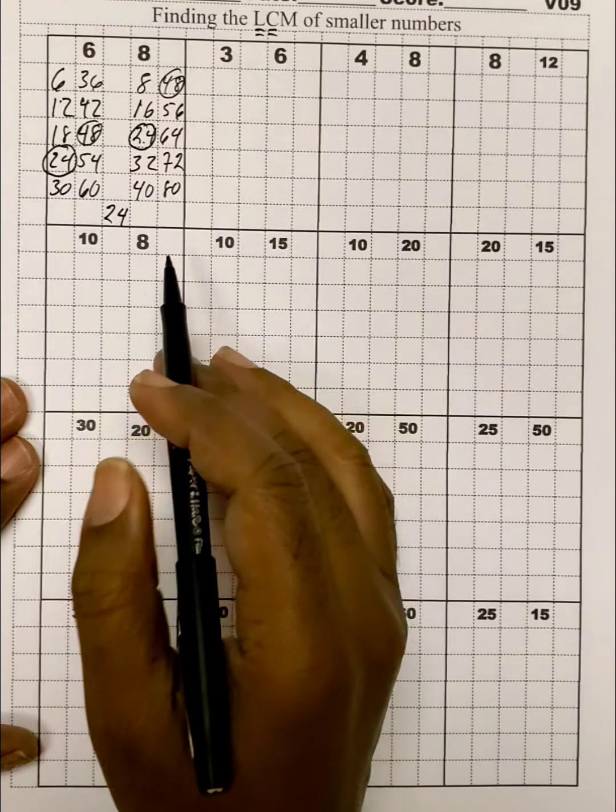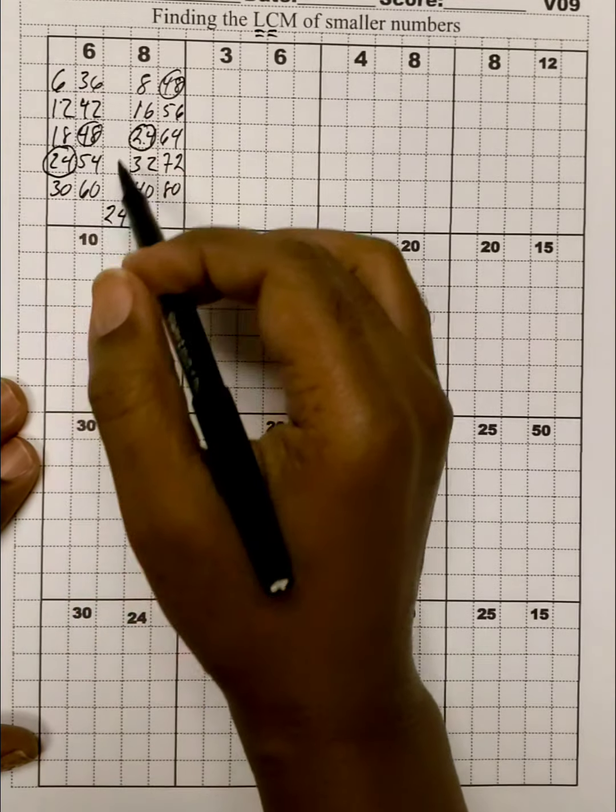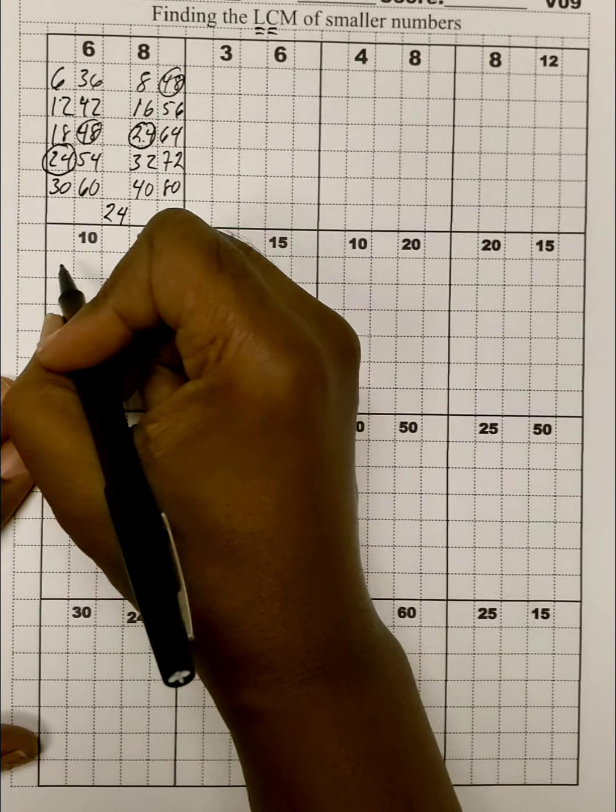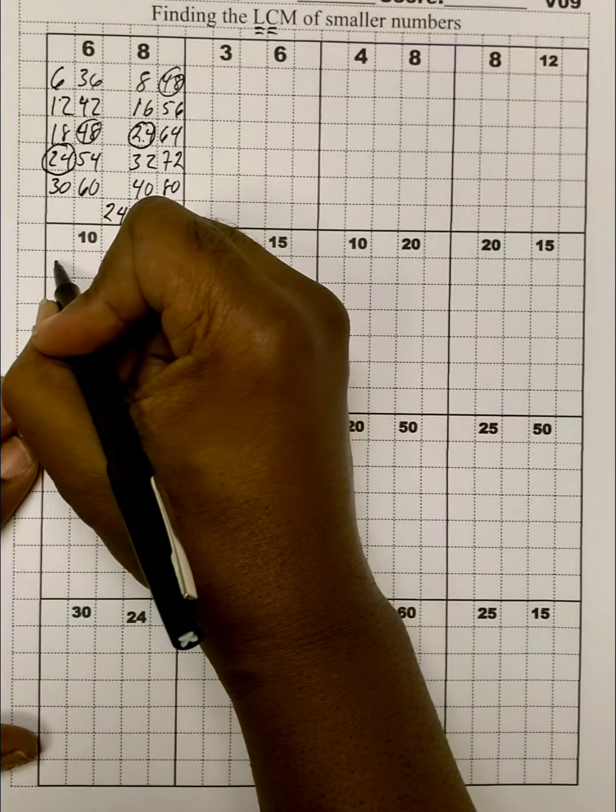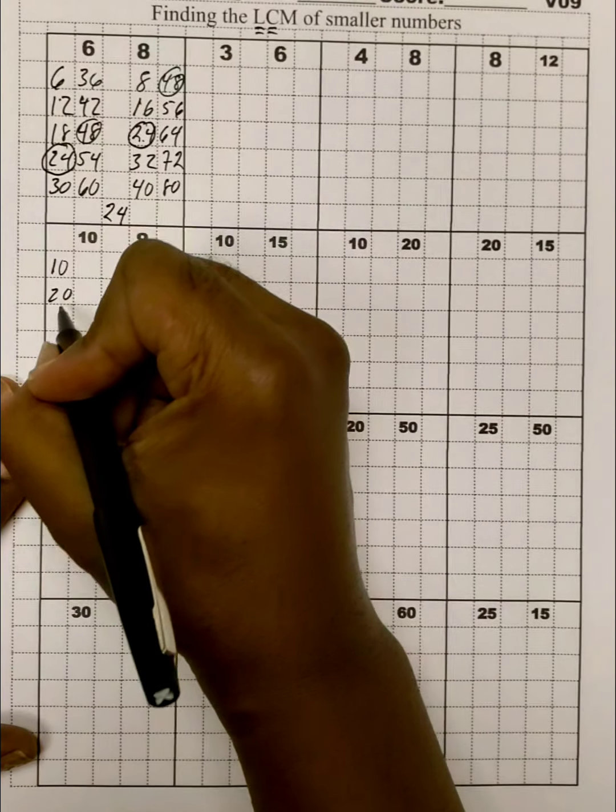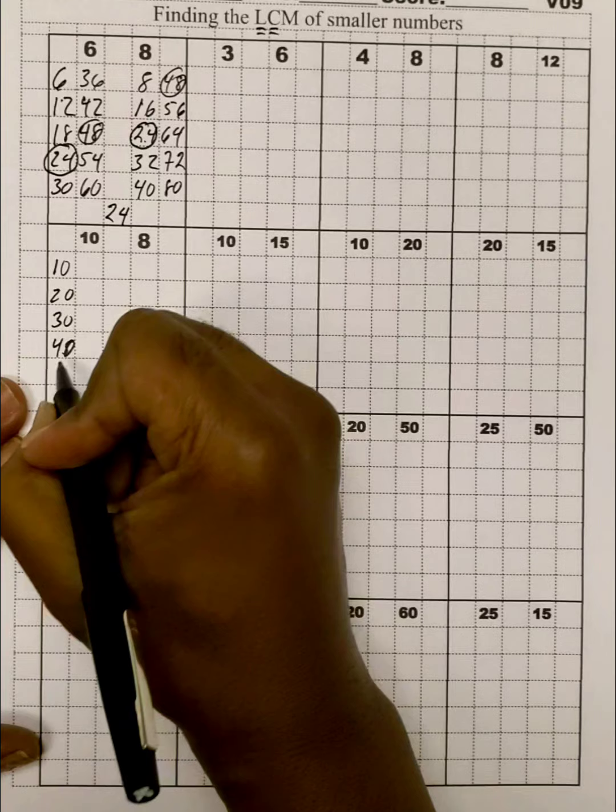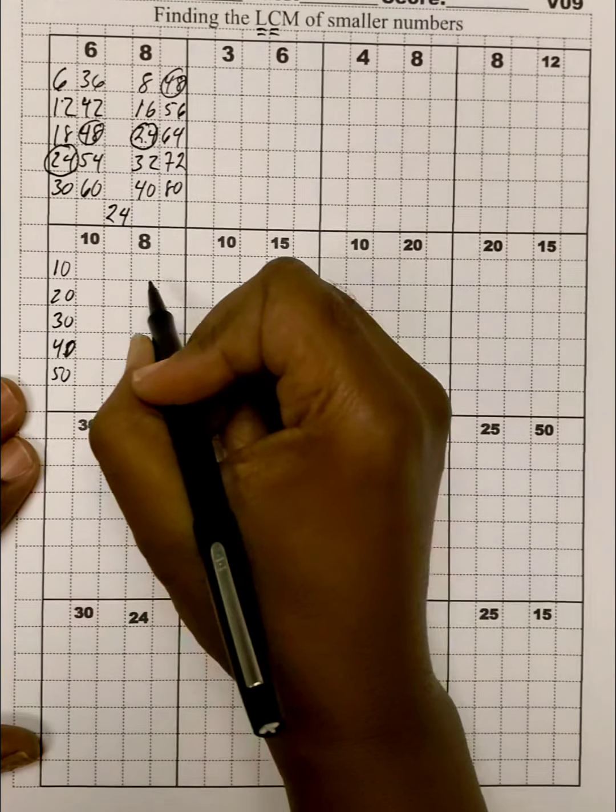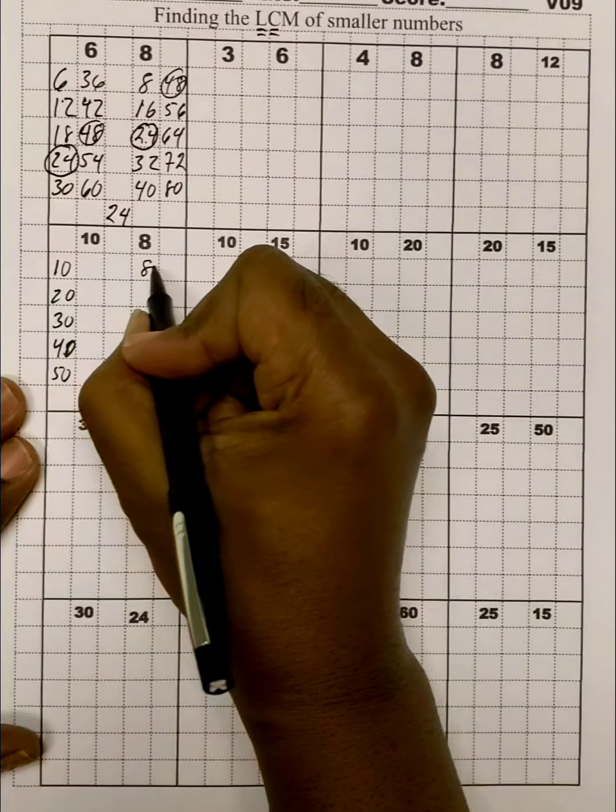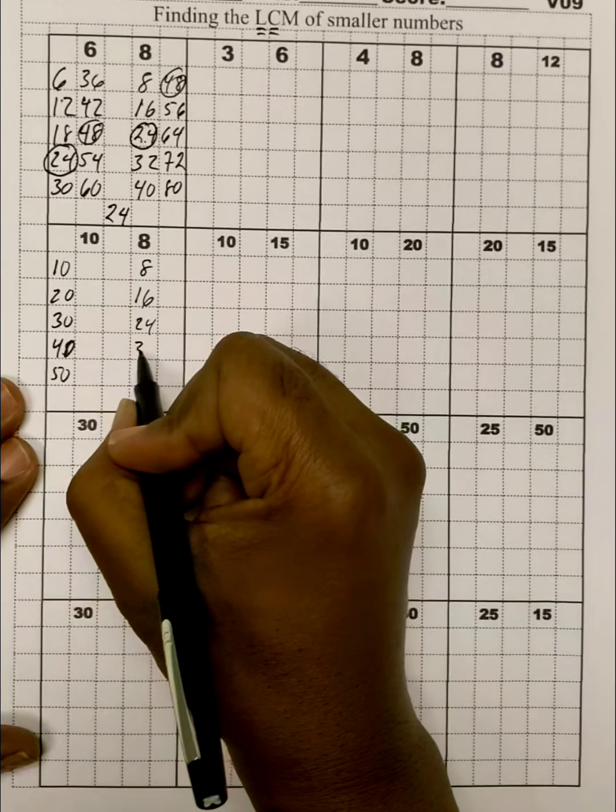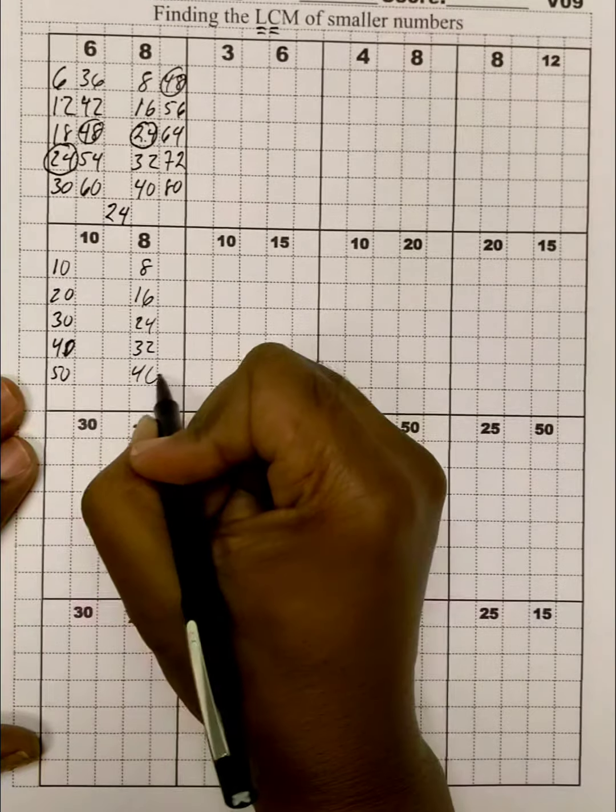And so, that's your LCM. Now, we won't go as far writing so many timetables. We'll just write a few. So, for the 10 timetables, let's just write a few. There's 10, there's 20, 30, 40, oops, and 50. And for the 8 timetables, there's 8, and then there's 16, and there's 24, there's 32, and there's 40.